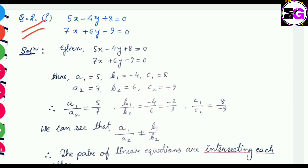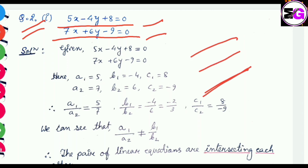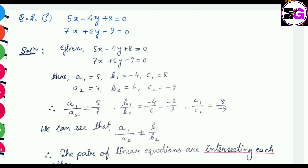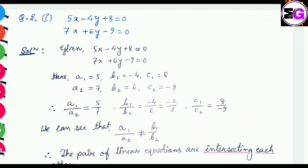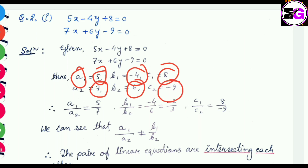Proceeding to question number 2: 5x minus 4y plus 8 equals 0 and 7x plus 6y minus 9 equals 0. We have to show whether the lines are intersecting at a point, parallel to each other, or overlapping each other. Here a1 equals 5, b1 equals minus 4, c1 equals 8, and a2 equals 7, b2 equals 6, c2 equals minus 9.